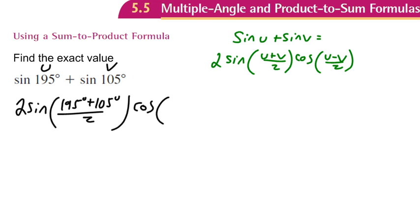Times the cosine of 195 degrees minus 105 degrees all over 2.